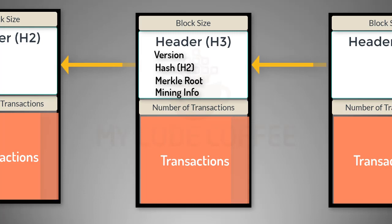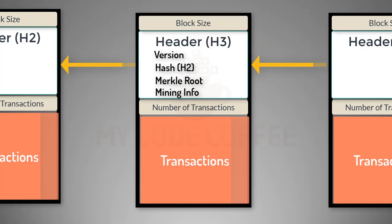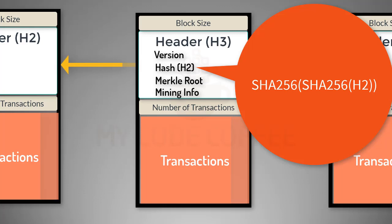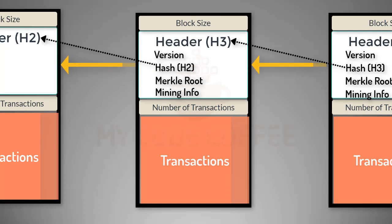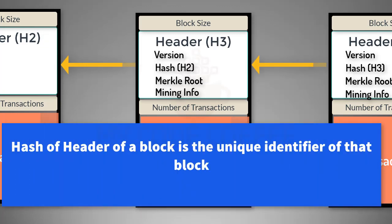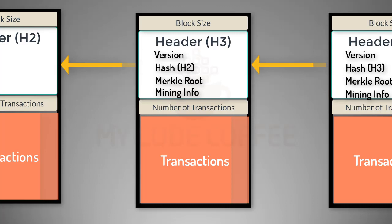Now let's talk about the hash of the header of the previous block in somewhat more detail. Many people call it the hash of the previous block, but actually it is the hash of the header of the previous block. This value is obtained by applying the SHA-256 algorithm twice to the header of the previous block. So this hash is a pointer to the previous block — in fact, this hash uniquely identifies the previous block. Since all blocks point to the identifier of the previous block, it creates a chain of blocks, and we call it blockchain.